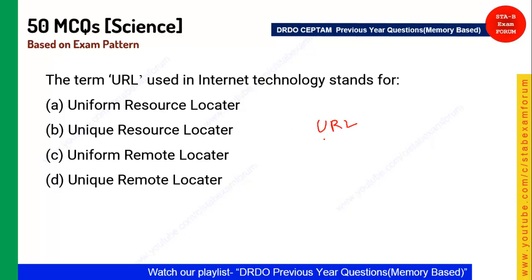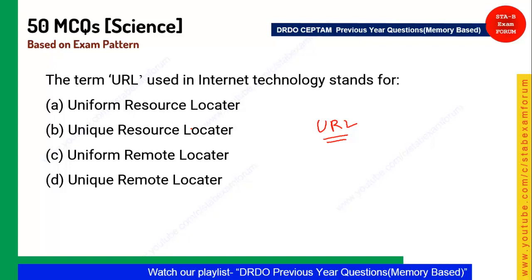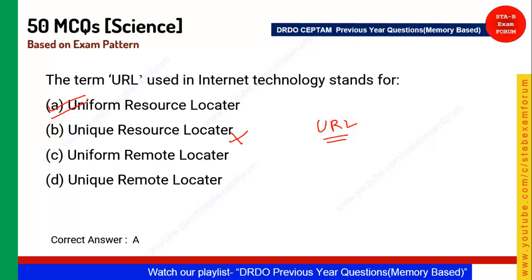Next question: What does URL stand for in an internet address? It is not Unique Resource Locator — it is Uniform Resource Locator. Option A is the correct answer.